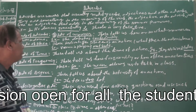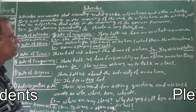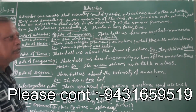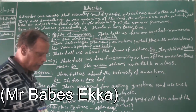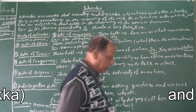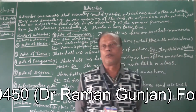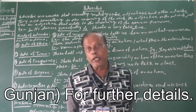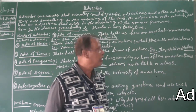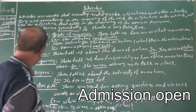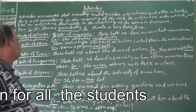Number three: adverb of time. This tells us about the time of action — when the action is done. For example: 'They arrived today.' The word 'today' indicates the time when they arrived, so 'today' is an adverb of time.